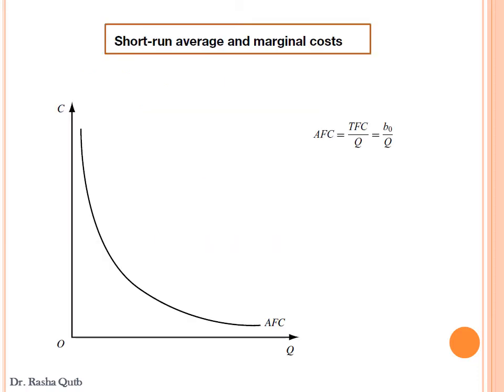Concerning the average cost in the short run: in order to get average fixed cost, we divide total fixed cost by the level of output. Since total fixed cost is constant whatever the level of output, as output level increases, average fixed cost decreases but never reaches zero. Graphically, it takes the shape of a rectangular hyperbola, which indicates that the area under the curve is equal.